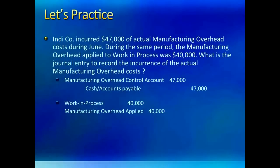Lastly, we have a situation where the company spent $47,000 on manufacturing overheads actually but applied only $40,000. So we will have two journal entries here: one for sending actual manufacturing overhead to the debit side of the manufacturing overhead account, and another to send the applied overhead to the debit side of the work in process account.